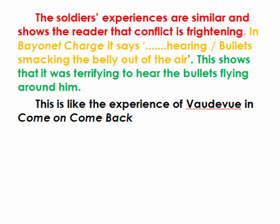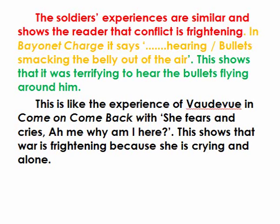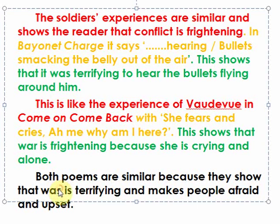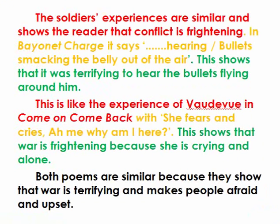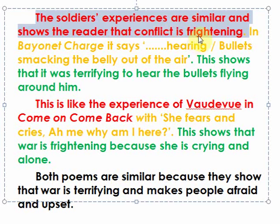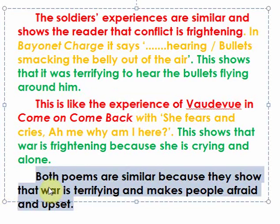'This is like the experience in Come On Come Back, where she fears and cries: Ah me, why am I here?' Then: 'This shows that the war is frightening because she's crying and alone.' Point, evidence, explain again. And then a bit of direct comparison at the end: 'Both poems are similar because they show that war is terrifying and makes people afraid and upset.' So that is essentially how you do it: PEE, PEE, and comparison — making sure that the opening is a comparative point identifying something similar or different in both poems, with a comparative link in the middle and comparison again at the end.